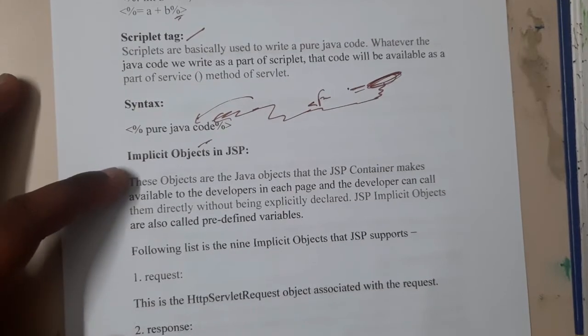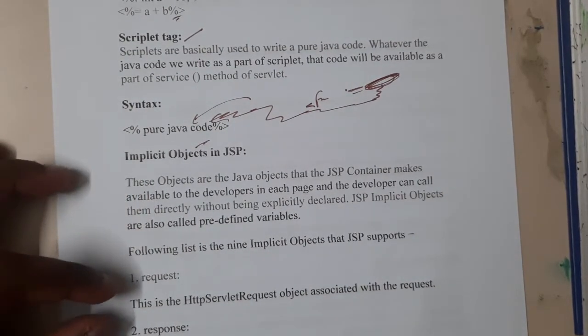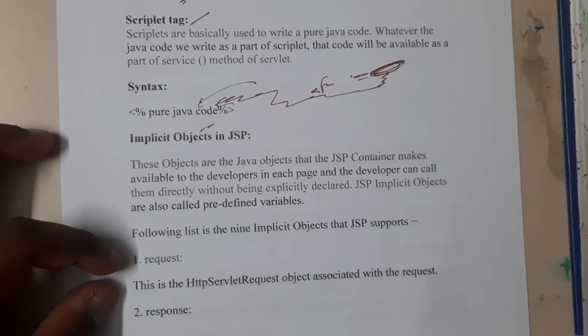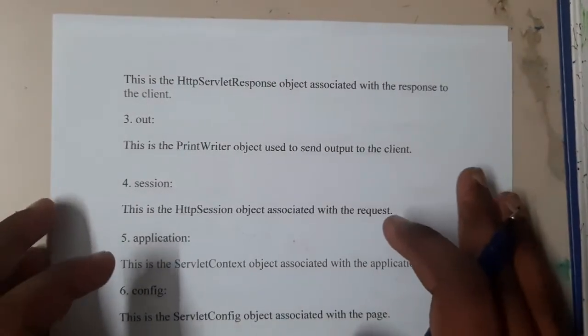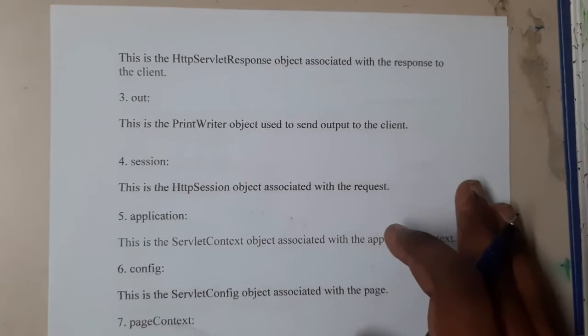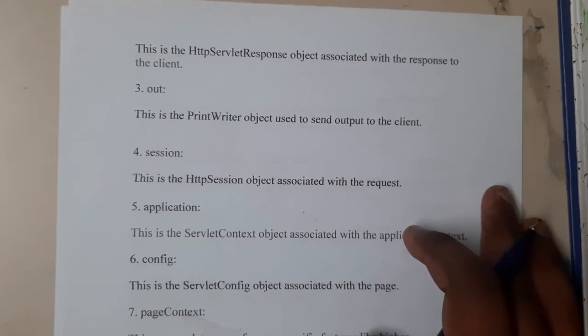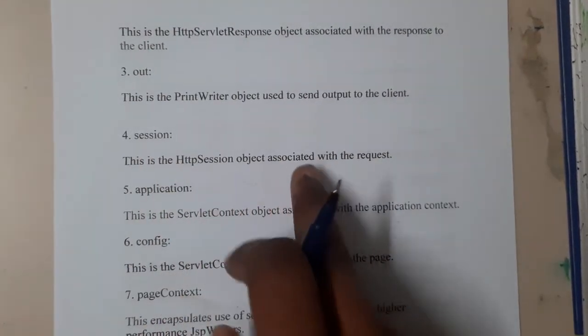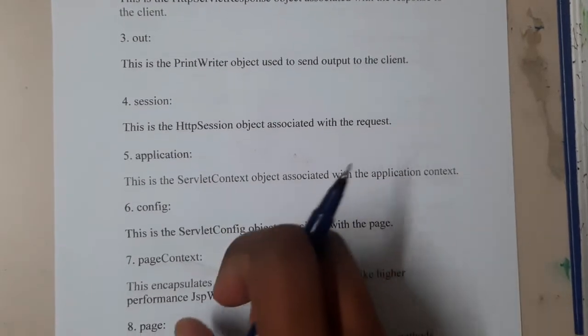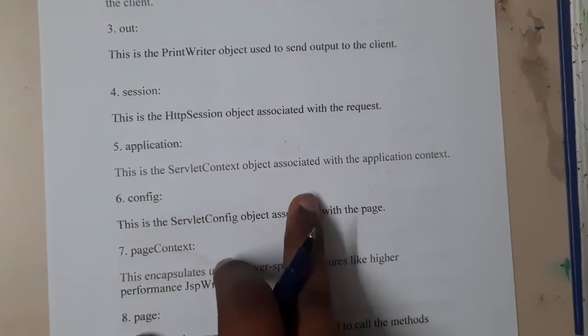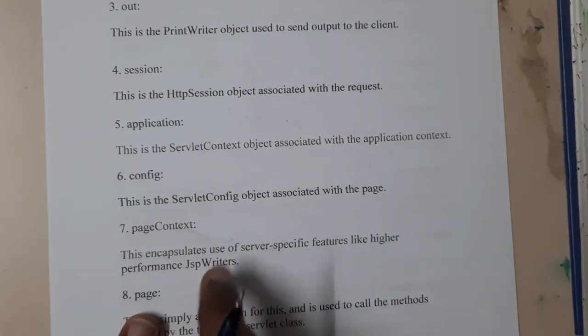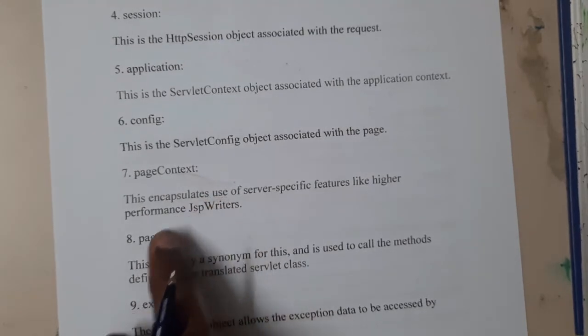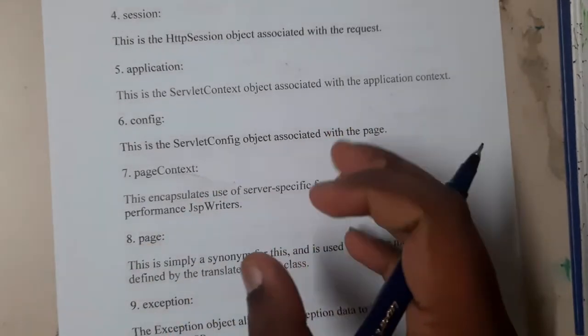Please make sure that you are learning about implicit objects. Implicit objects are request, like the HTTP request which we send. Response is the object that we get. Out, we are using for print writer. Session to establish the meaningful time for a particular thing. Application is based on the context and configuration for servlet configuration. Page context: what is page encapsulated in, what does page consist of.